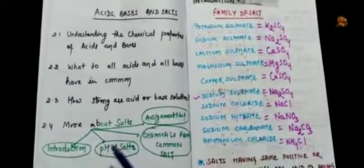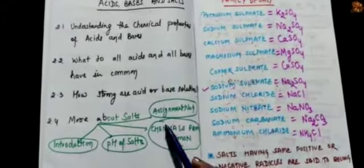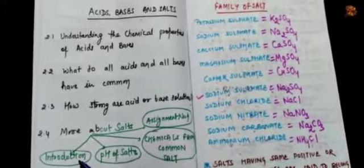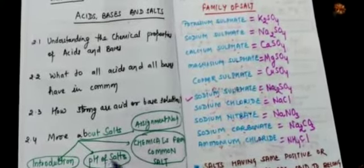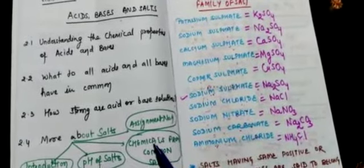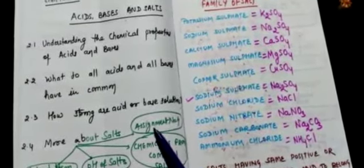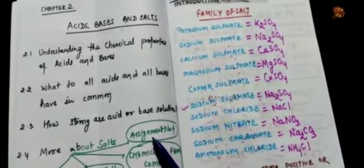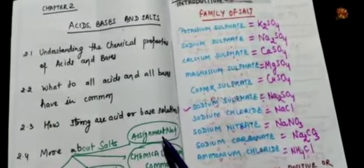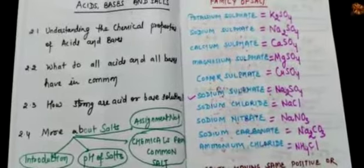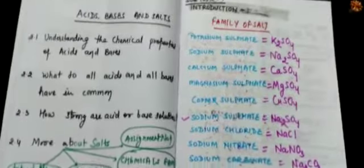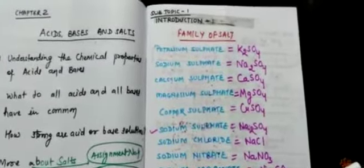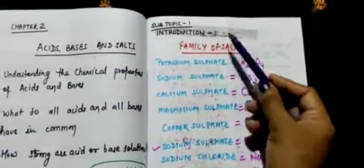In this topic, how many subtopics are there? 4. First is Introduction, second is pH of Salts, third is Chemicals from Common Salt, and number 4 is Assignment number 4 at the end. So the first topic we are dealing with here is Introduction.